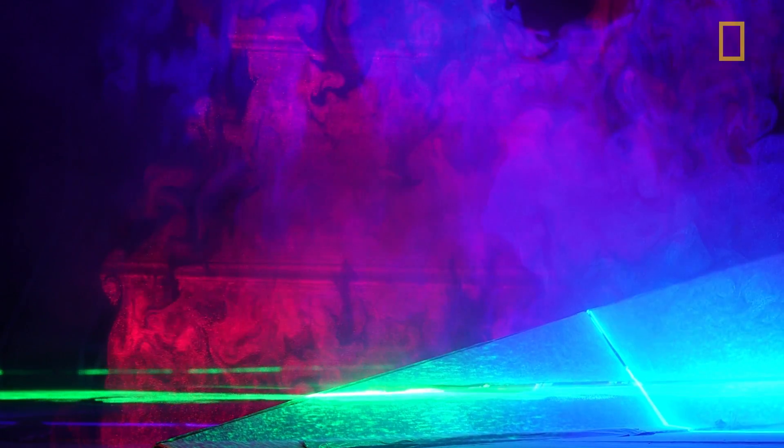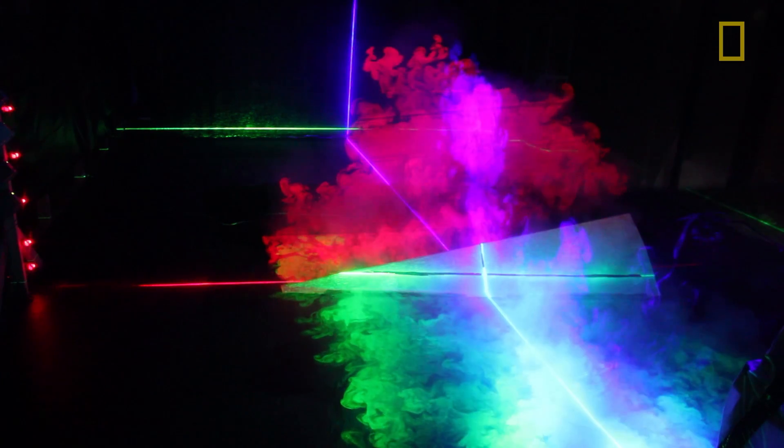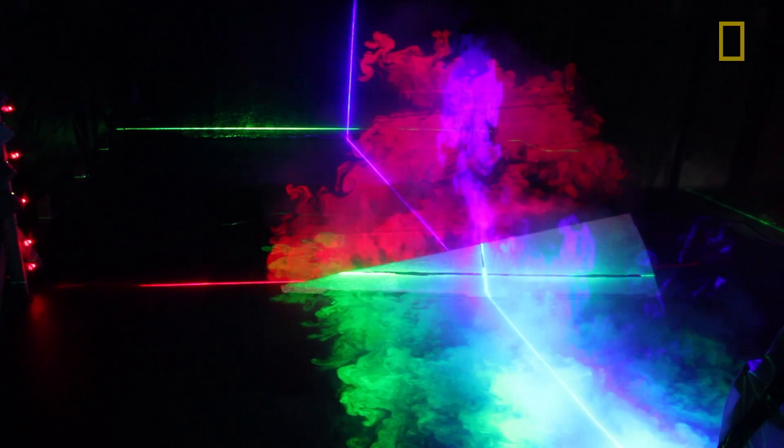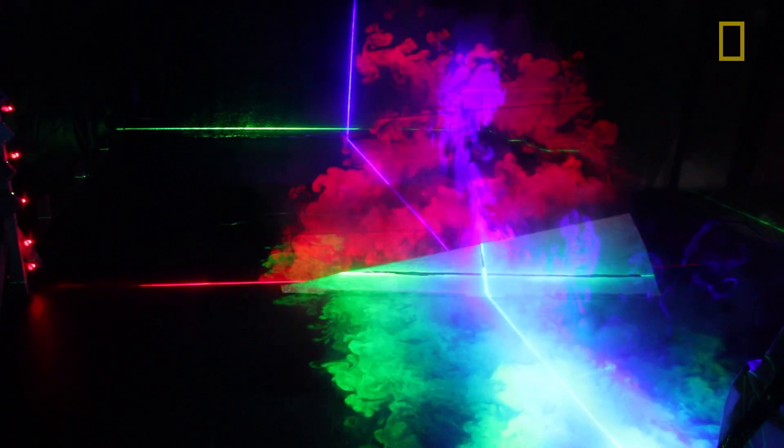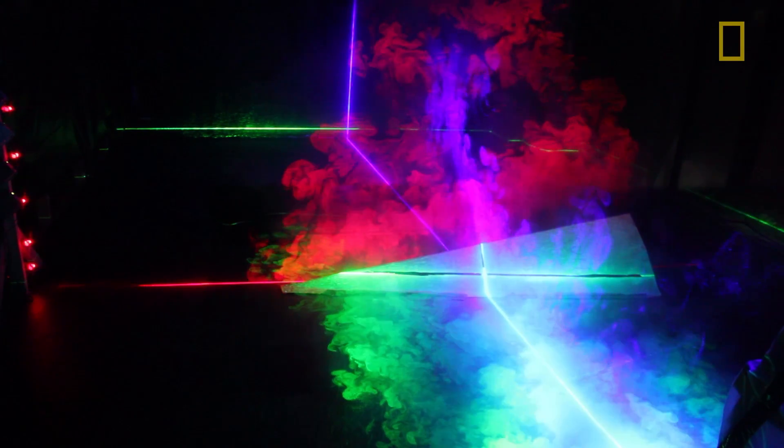Volcanoes can inject ash up into the stratosphere. They can shut down aviation over a large fraction of the globe. They can also influence the climate. So having a better understanding of how volcanoes work can hopefully help us mitigate some of those volcanic hazards.